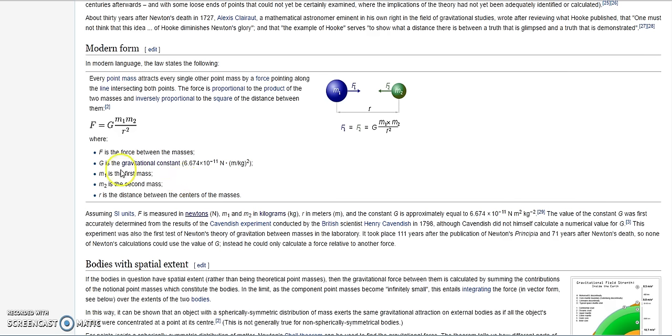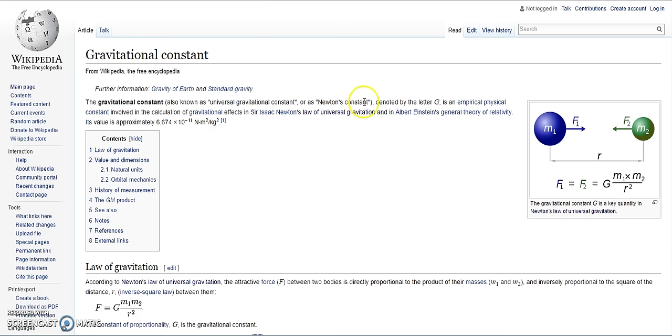Now, here's the gravitational constant as a multiplier. The gravitational constant is denoted by the letter G. It's an empirical physical constant involved in the calculation of gravitational effects in Isaac Newton's law of universal gravitation and in Albert Einstein's general theory of relativity. Here's the value: 6.674 times 10 to the power of negative 11 N, which is in Newton, meters squared per kilogram squared.